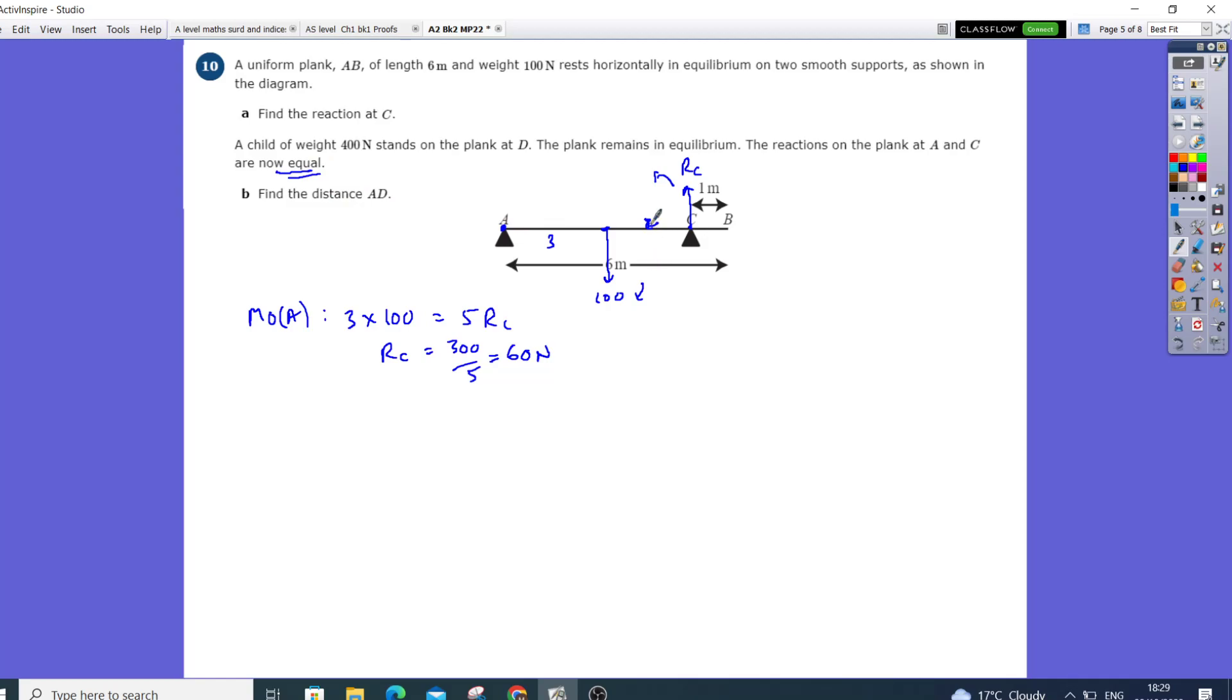So there's the child going there, that is going to be 400 newtons coming down, so that's D. We've got 100 coming down clockwise, the weight of the child is going to go clockwise,